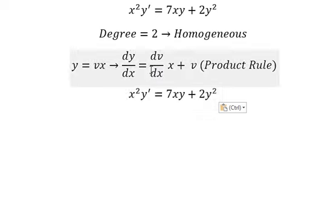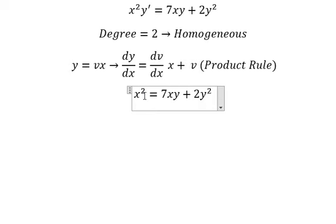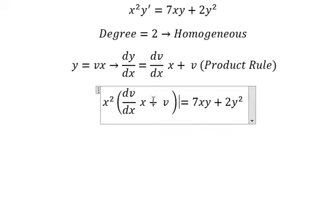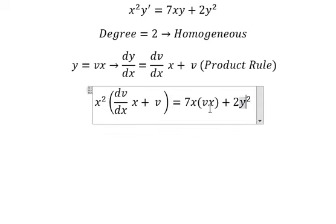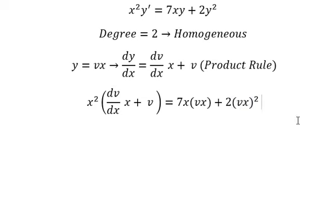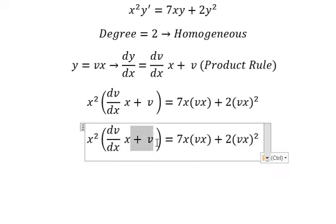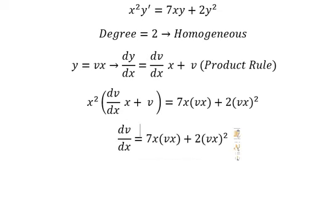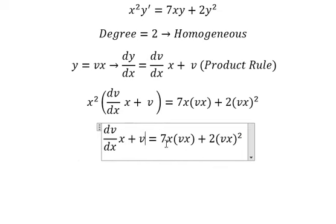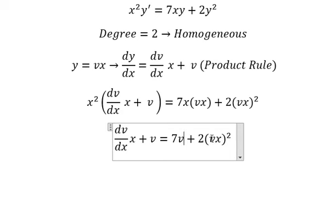So this one, y is vx, so we have vx. Next we simplify x² for both sides, and we have like this. This one we got v, and this one we got about this way.